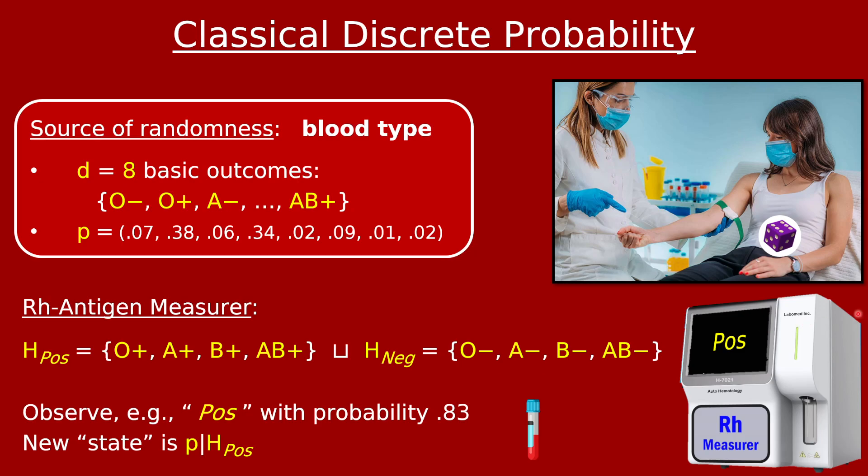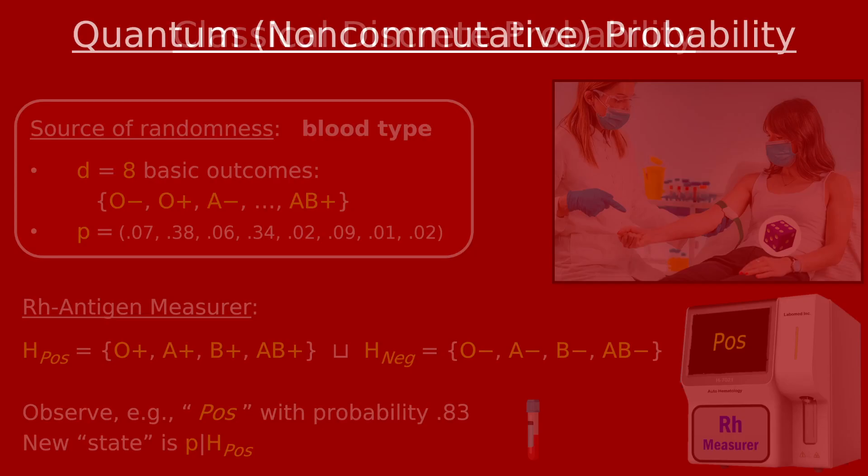That's a little refresher of some things from classical discrete probability. I put all those things up to contrast them with the basics of quantum probability, also known as non-commutative probability. This is nothing more than a literal generalization of the familiar laws of probability — and this generalization is actually how particles in our real world behave, or what governs their behavior.